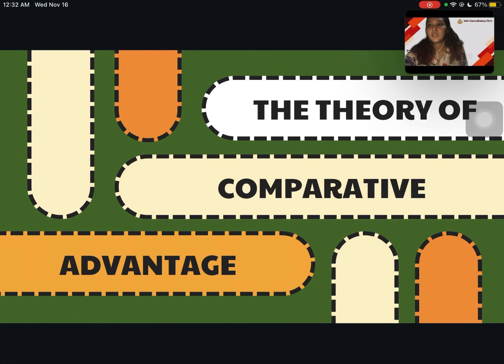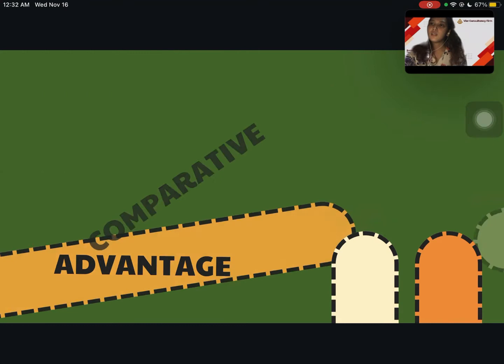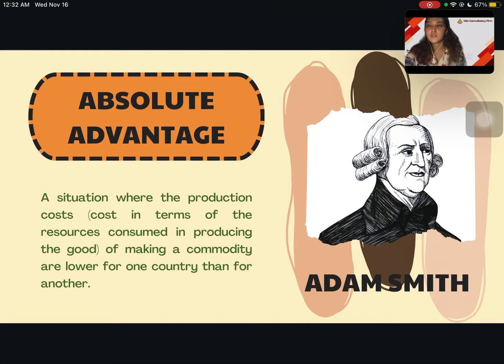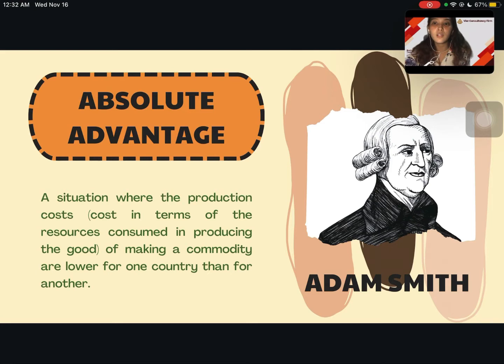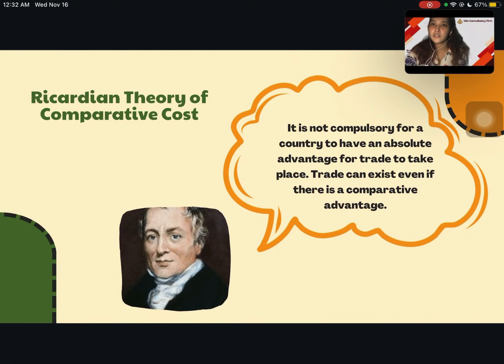Let's now proceed to the theory of comparative advantage. But before that, let's have a quick review about absolute advantage by Adam Smith. Absolute advantage is a situation where the production cost in terms of the resources consumed in producing a commodity are lower for one country than for another. But this is where the Ricardian theory of comparative cost comes in. Ricardo argued that it is not compulsory for a country to have an absolute advantage for trade to take place.